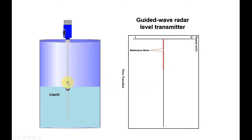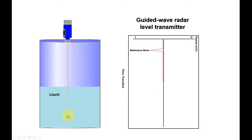Then you can see the signal bounce back and continue to move back to the level transmitter. This radar signal will continue to move down across the level probe. Meanwhile, we can see the waveform continue to move in such a way. Then it continues to move, and when it reaches the end of the level probe, it will travel back to the level transmitter. The liquid surface signal which was bounced back by the liquid surface will reach the level transmitter electronic board and be detected — hence you can see there's a liquid echo here, represented by the liquid surface.